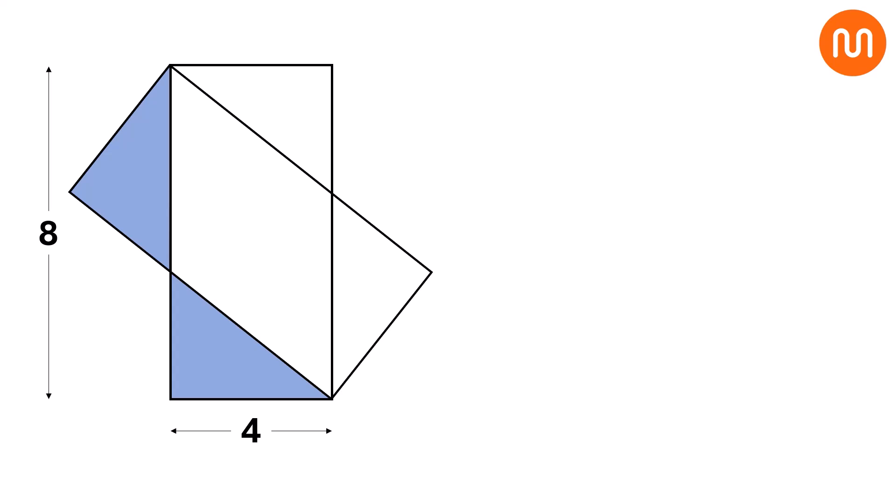By the vertical angles theorem, this angle is congruent to the corresponding angle above. Since both triangles are right triangles, their remaining angles must also be congruent. This tells us that the two triangles are similar.